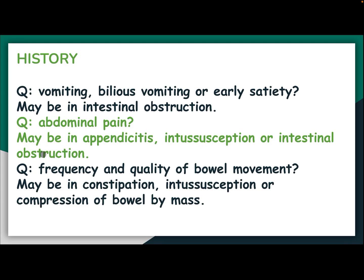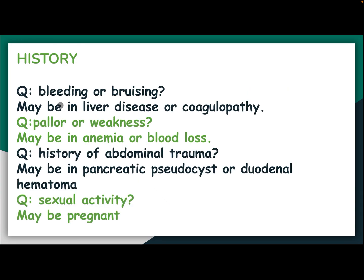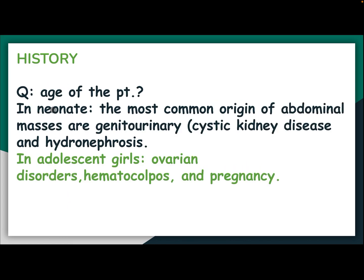Abdominal pain may be seen in appendicitis, intussusception, or intestinal obstruction. Frequency and quality of bowel movement may point to constipation, intussusception, or compression of the bowel by a mass. Bleeding or bruising may indicate liver disease or coagulopathy. Pallor or weakness may indicate anemia or blood loss. History of abdominal trauma may suggest pancreatic pseudocyst or duodenal hematoma.